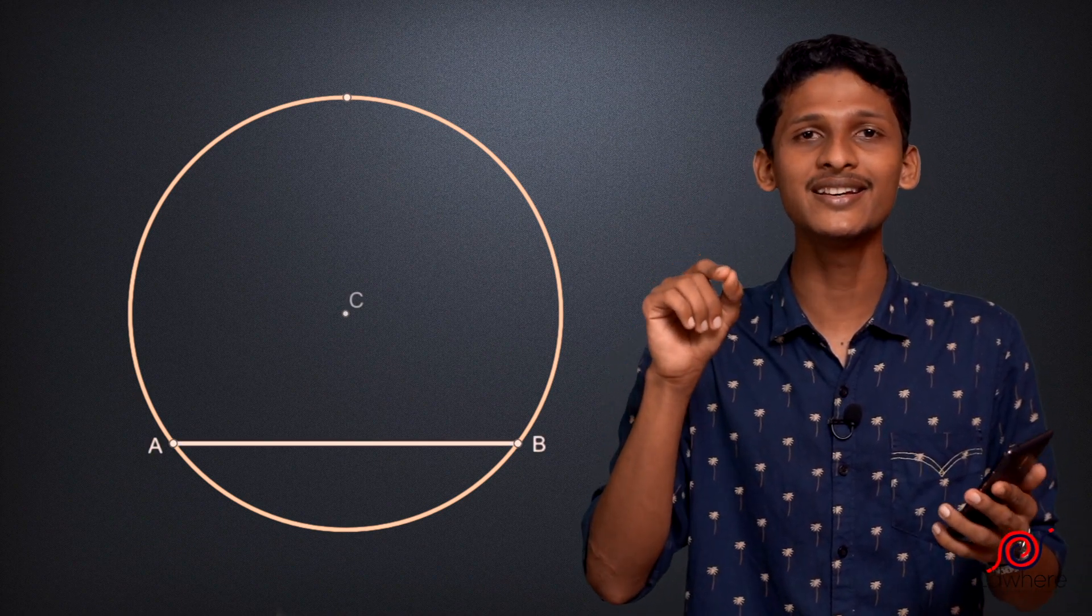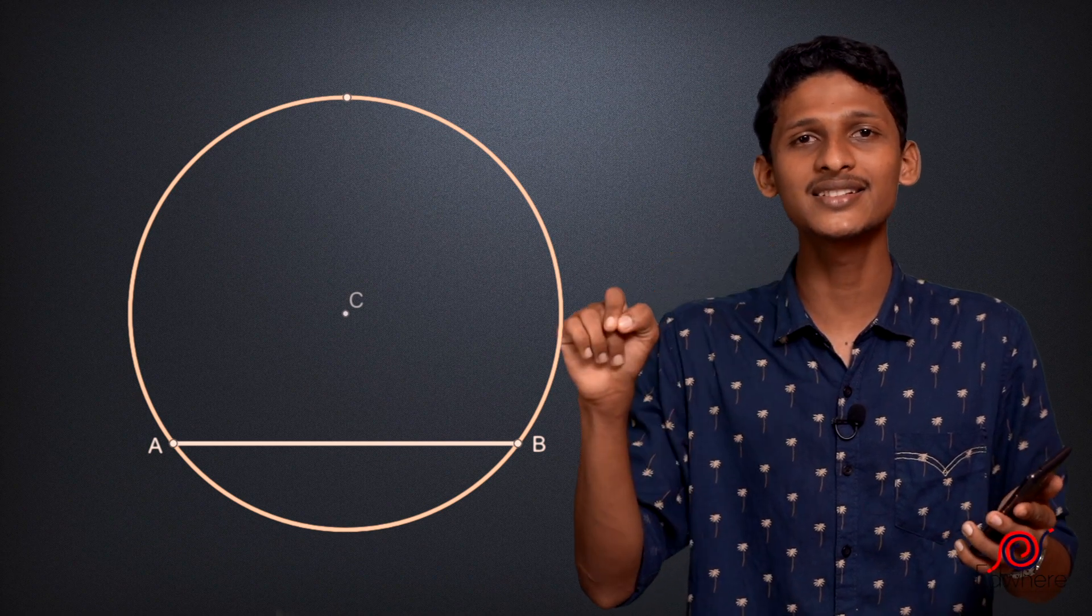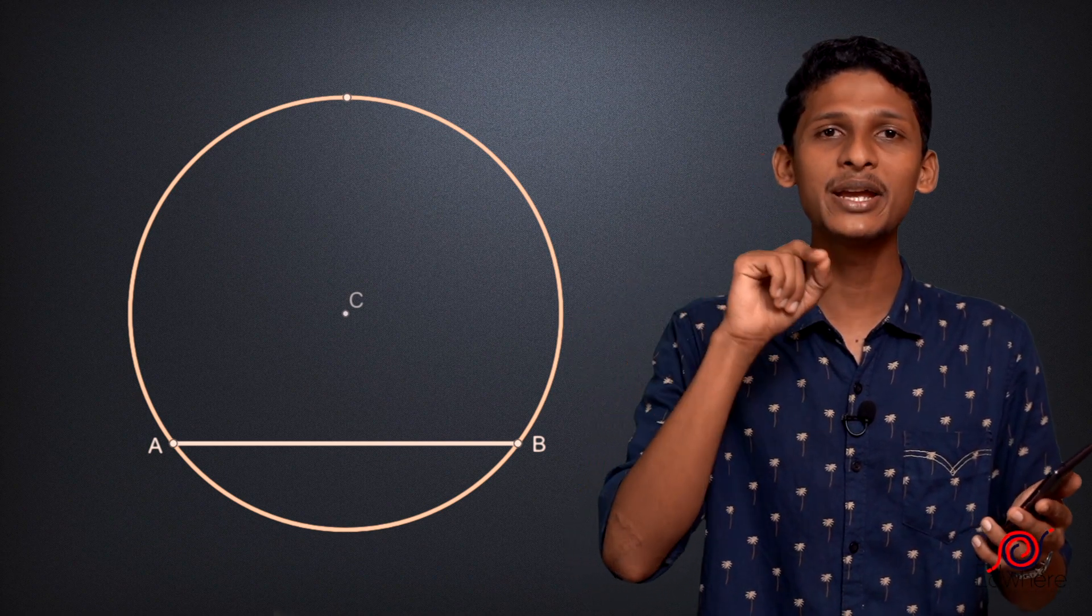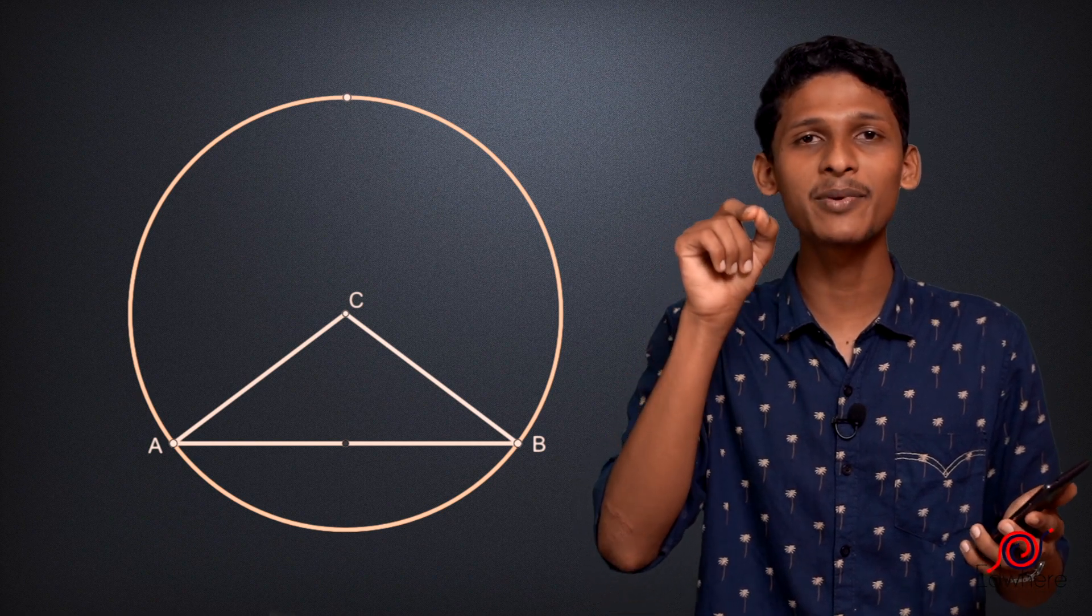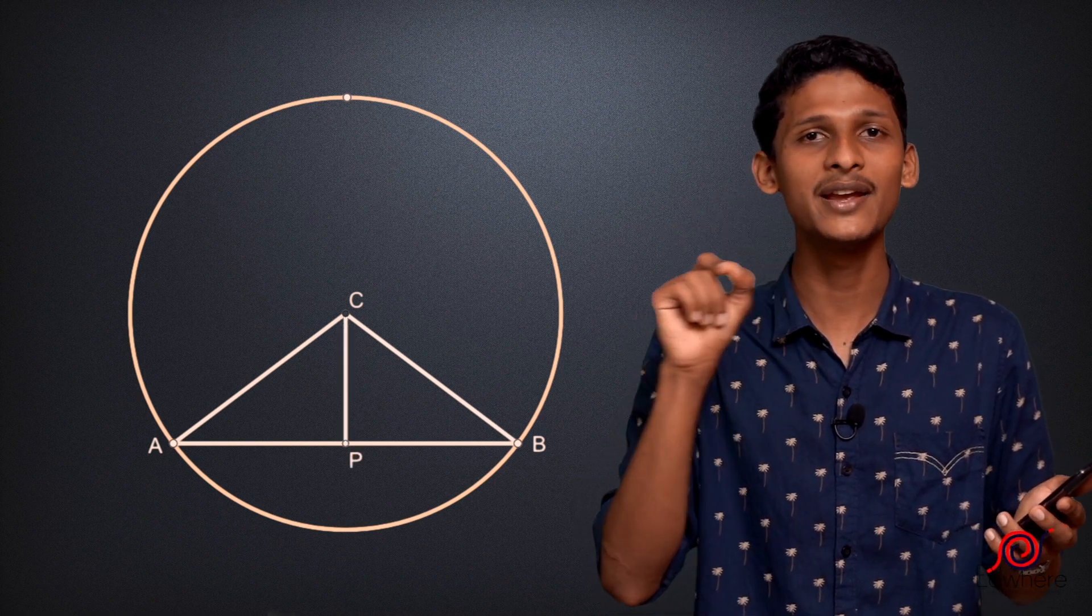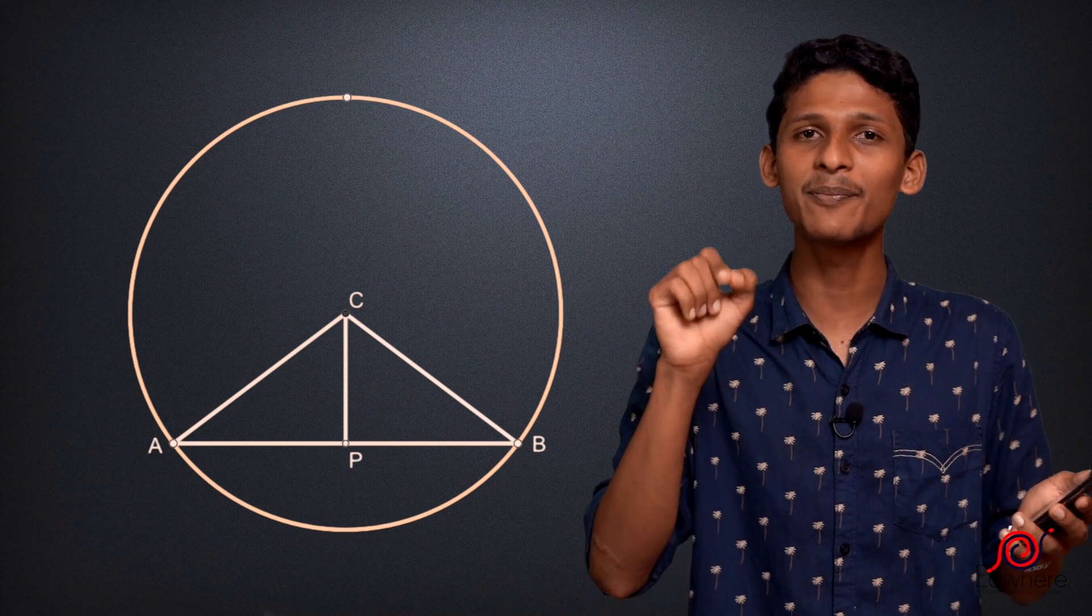We are going to mark the center C and the midpoint of AB, then join the two radii CA and CB. That means we mark a perpendicular distance from AB. That point is P.